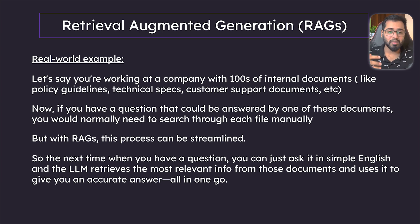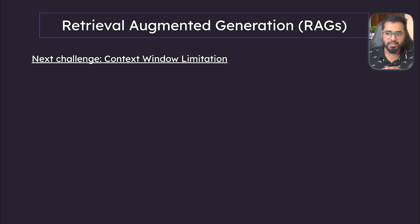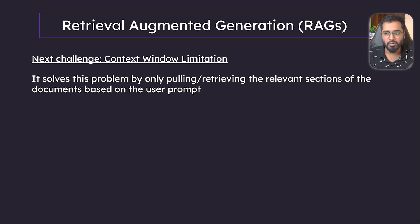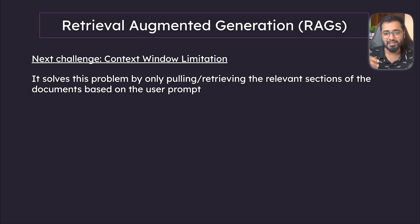But this brings us to another important challenge called context limits, or context window. You've probably experienced this where if you give large, huge prompts to the LLM it really struggles to answer the question — it starts hallucinating and starts to forget what happened earlier, because the context window limit becomes very high.